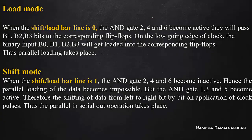We have an extra input load — the input is called shift or load. If the condition shift-or-load-bar is zero, it will load the external input into our register. After shift-or-load-bar equals 1, the register shifts the data out. There is a flip-flop value and you have to be in shift mode. Shift mode works when shift-or-load-bar equals 1. When shift-or-load-bar equals 0, you can load the external value into our register with different flip-flops.